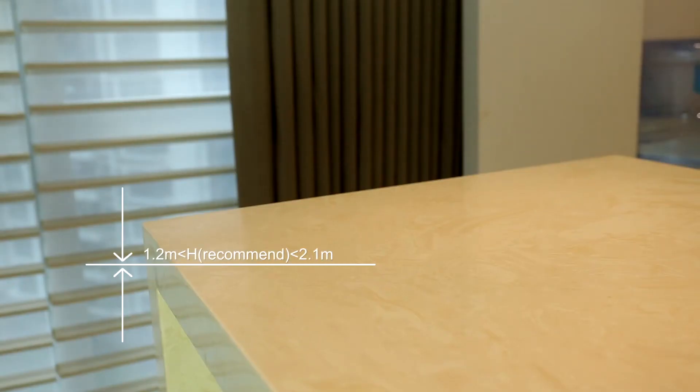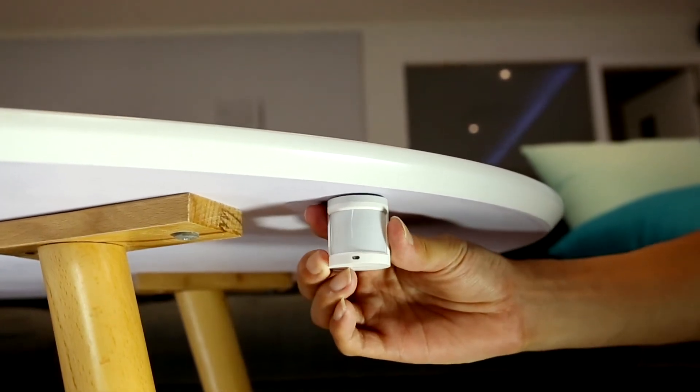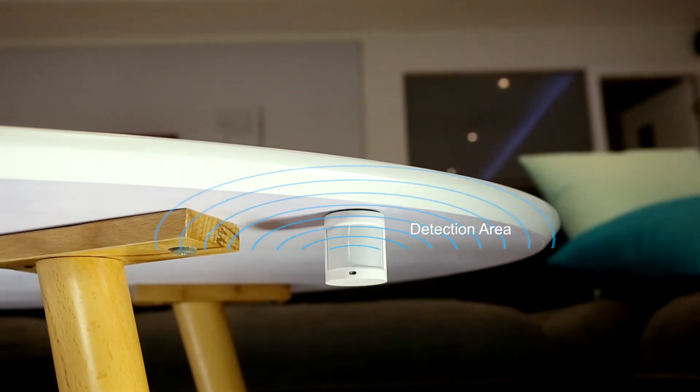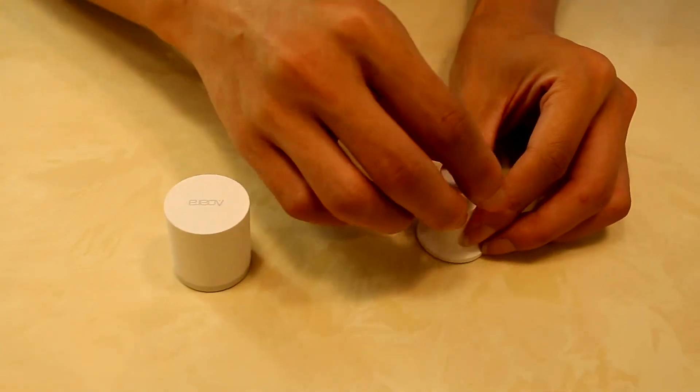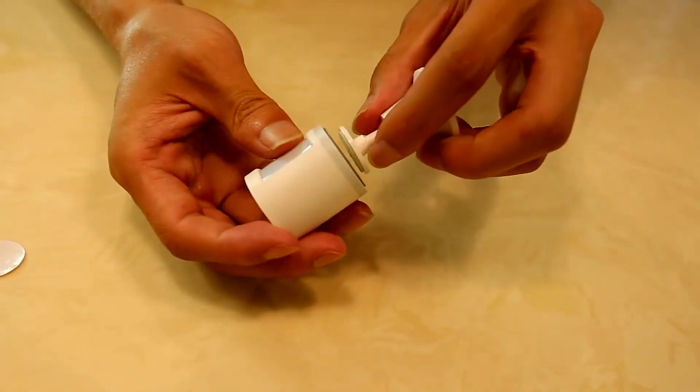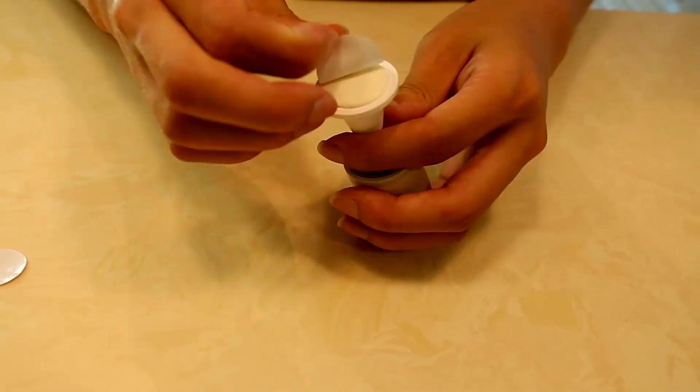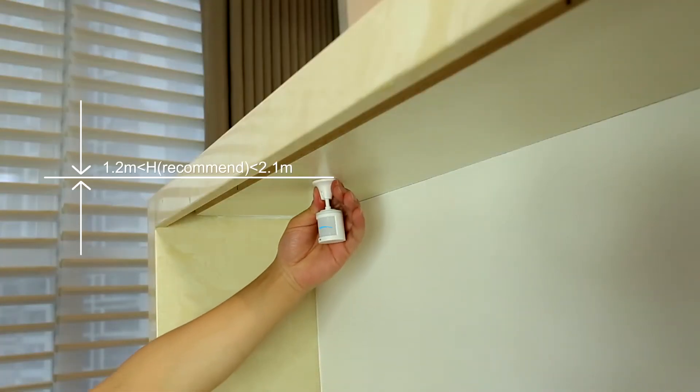Option one: place the motion sensor where you need it. Option two: remove the protective film and stick it to the desired location. Option three: stick the motion sensor to the stand and stick the stand to where you need it.